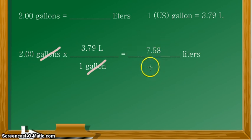Now before we report our final answer, we have to always look back at the given and check the number of significant figures. We have 2.00, that is equal to 3 significant figures, so our final answer should also contain 3 significant figures. Let's check: 1, 2, and 3. So this will now be our final answer.